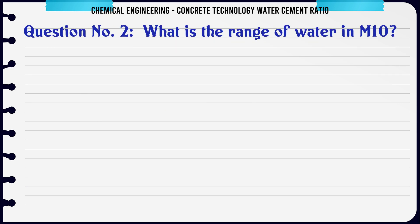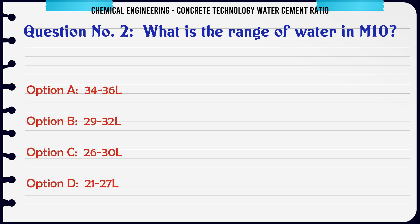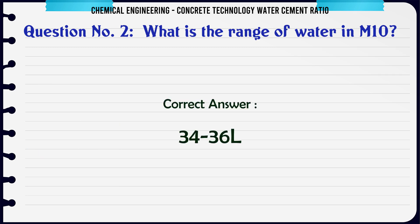What is the range of water in M10? A. 34–36 L, B. 29–32 L, C. 26–30 L, D. 21–27 L. The correct answer is 34–36 L.